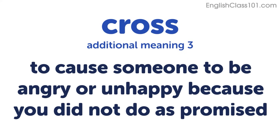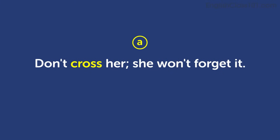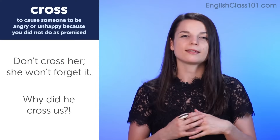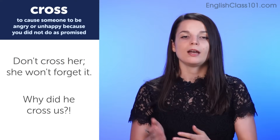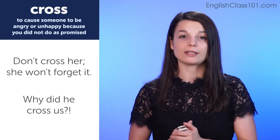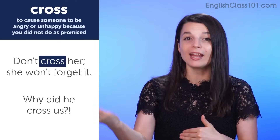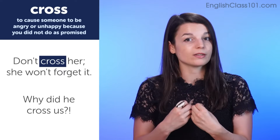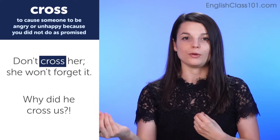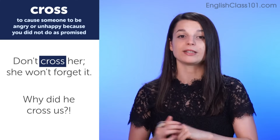The next variation is to cause someone to be angry or unhappy because you did not do what you promised. Some examples: 'Don't cross her — she won't forget it.' 'Why did he cross us?' This use of 'cross' is not so common in today's American English but you might hear it from time to time. It's especially used in warnings. 'Don't cross her' means don't get on her bad side — don't do anything to make her angry. When you cross someone, you make a promise but don't follow through, or you choose to do something different from what you agreed upon.